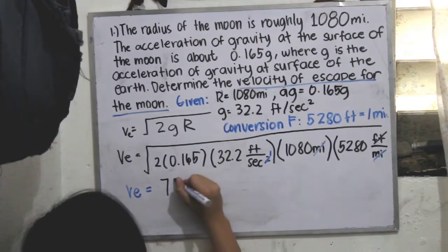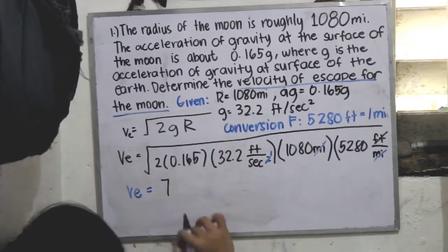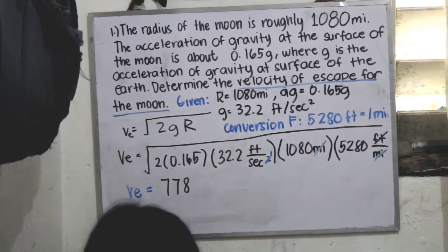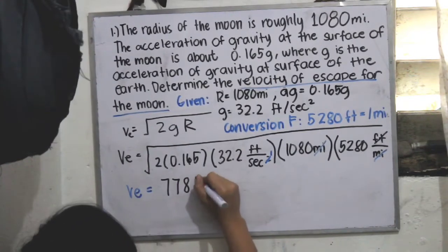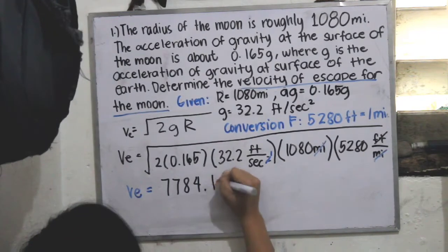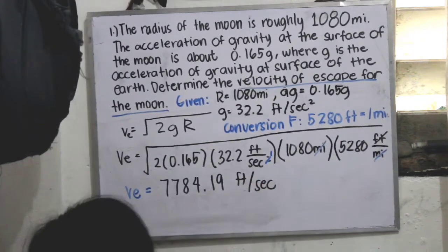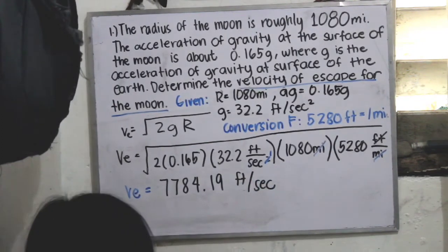So we have 7,784.19 feet per second. Approximately. So that is our final answer.